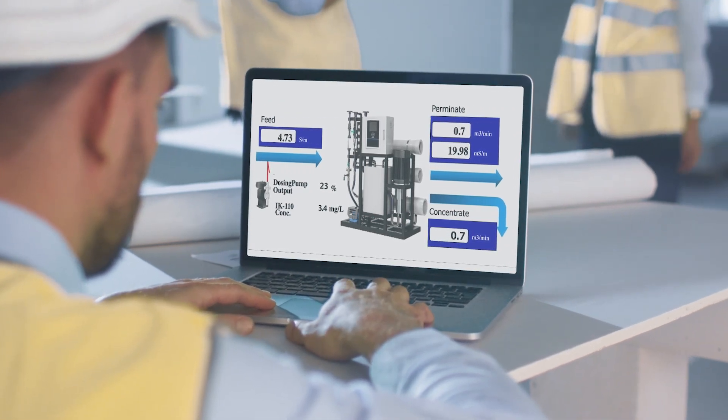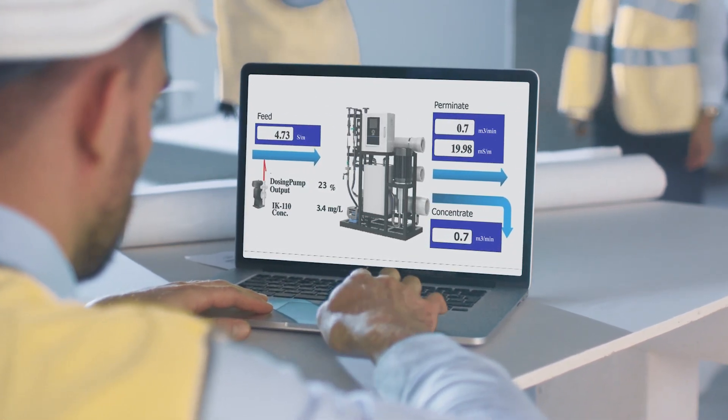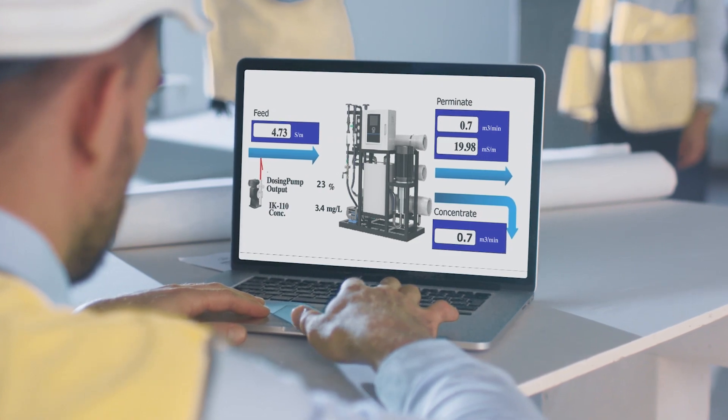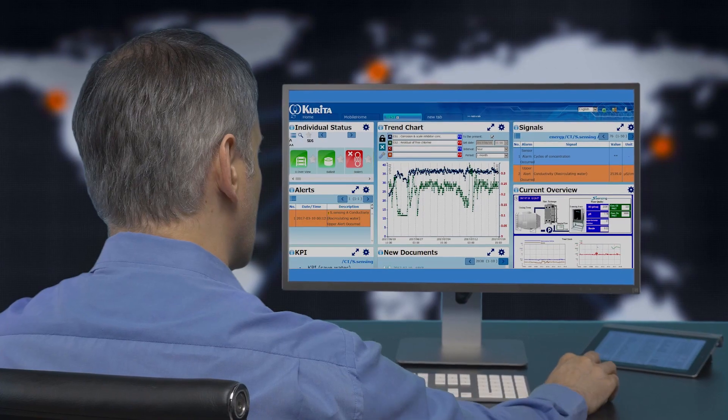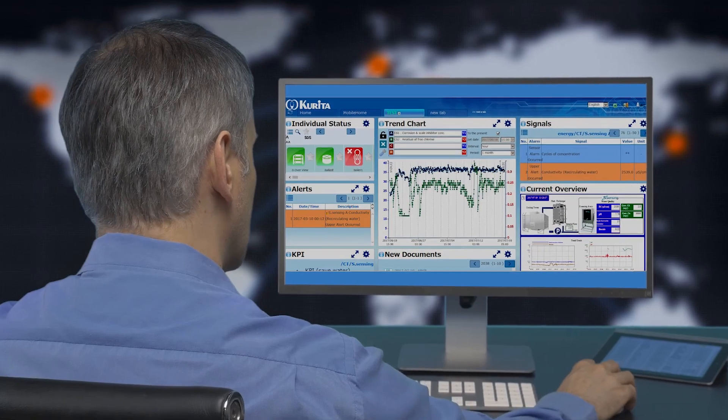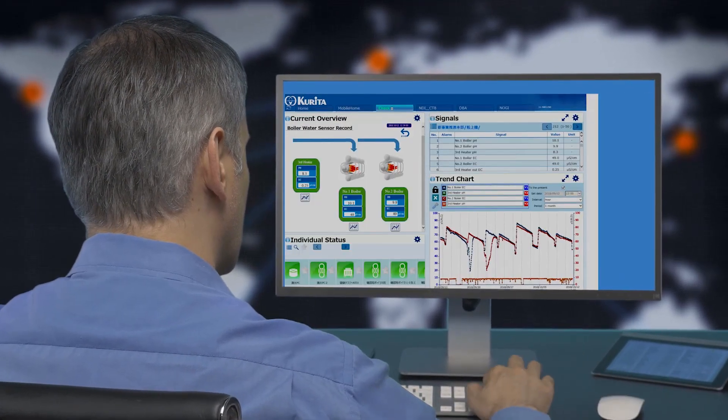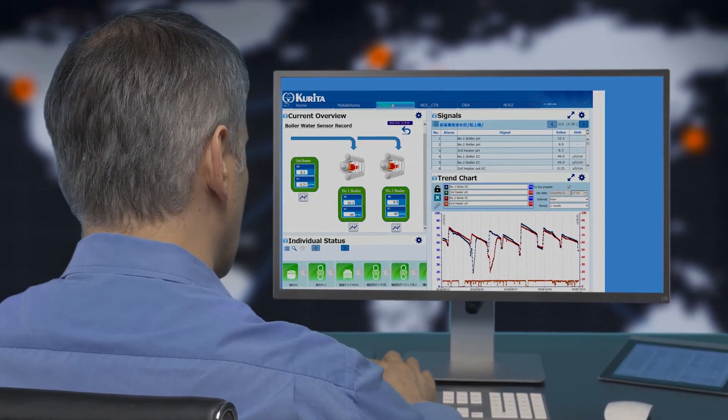S-Sensing enables integrated management of information on water treatment at factories. It also allows on-site information from multiple factories to be displayed at once. And it enables remote monitoring of multiple locations in real time, anywhere, anytime.